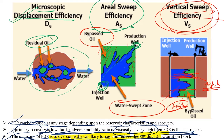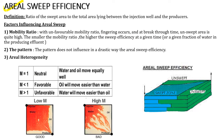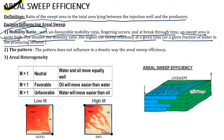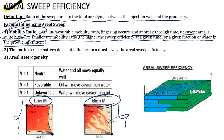Aerial sweep efficiency is the ratio of swept area to the total area lying between the injection well and the producer well. Factors influencing aerial sweep: first, mobility ratio — with unfavorable mobility ratio, fingering occurs and at breakthrough time unswept area is quite high. The smaller the mobility ratio, the higher the sweep efficiency at a given time. When having low mobility ratio, a proper sweep is obtained. With high mobility ratio, fingering occurs and there are high amounts of unswept zones and bypassed oil.